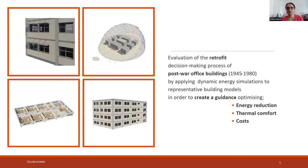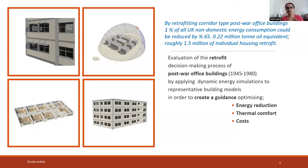Considering the state of the stock and the great potential for energy savings, the aim of my project was the evaluation of the retrofit decision-making process of post-war office buildings, in order to create guidance optimizing energy reduction, thermal comfort, and costs. Despite the diversity in design, it was possible to group buildings according to plan stereotypes — the most common being a cellular plan type, representing 34 percent of the post-war office building stock. By retrofitting corridor-type post-war office buildings, one percent of all UK non-domestic energy consumption could be reduced by 65 percent.